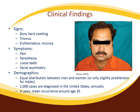Osteosarcoma nearly always presents with swelling, usually bony hard. In addition to trismus, erythematous mucosa, submandibular lymph node involvement, and mucosal ulceration may be seen in late stage. It typically manifests as a painful enlarging mass, and pathologic fracture may be the first sign, especially when affecting long bones.